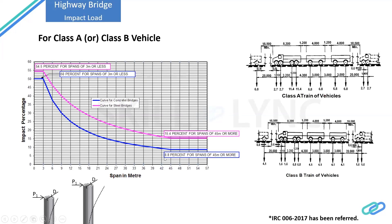The reason smaller spans have higher impact factors relates to stiffness. Consider two columns of the same diameter but different heights with the same horizontal force applied. The shorter column is more rigid and attracts more force, resulting in higher bending. The taller column has lower stiffness and attracts less force. By the same logic, a short-span bridge has higher stiffness and thus a higher impact factor, while a longer span has lower stiffness and a smaller impact factor.